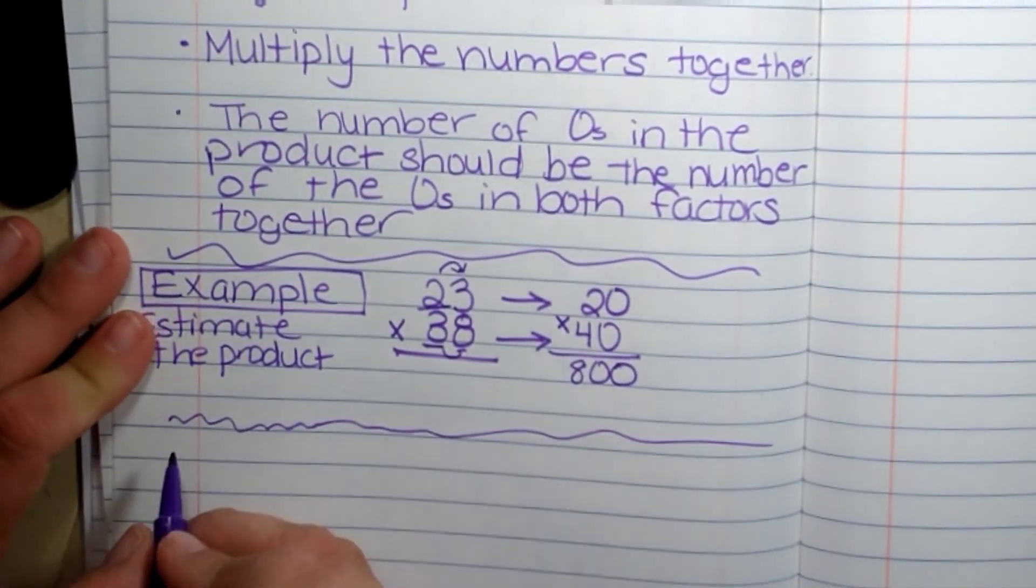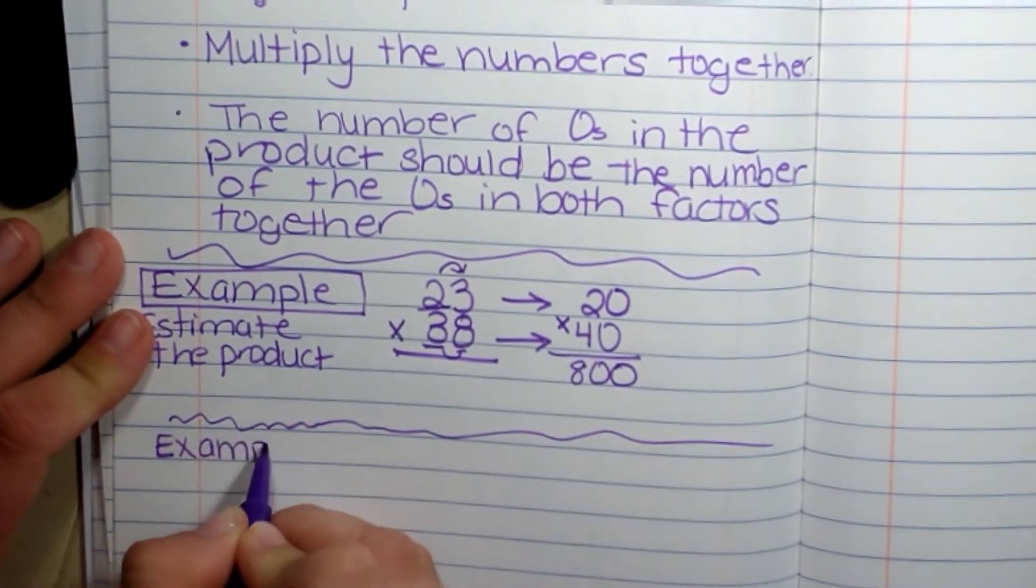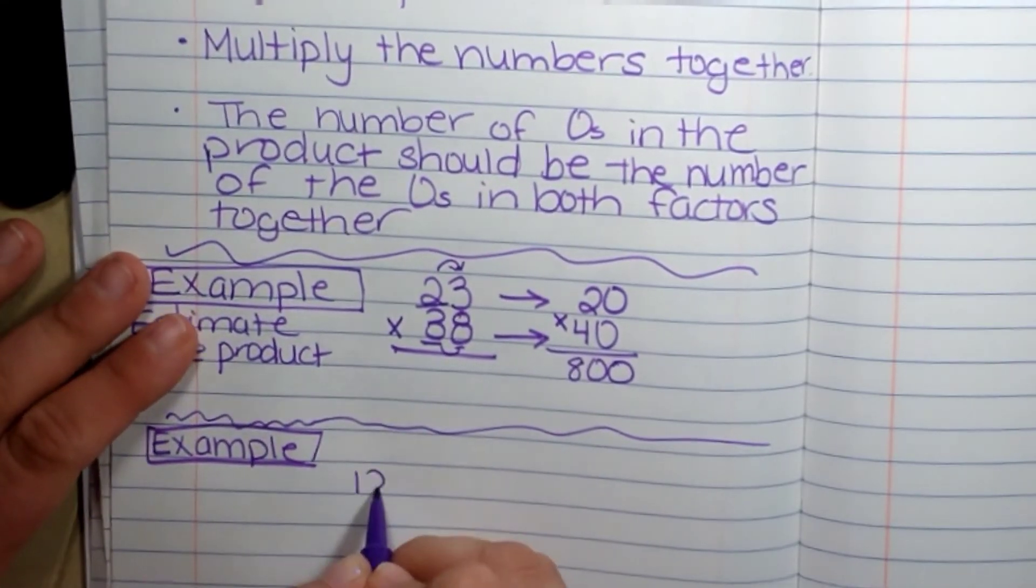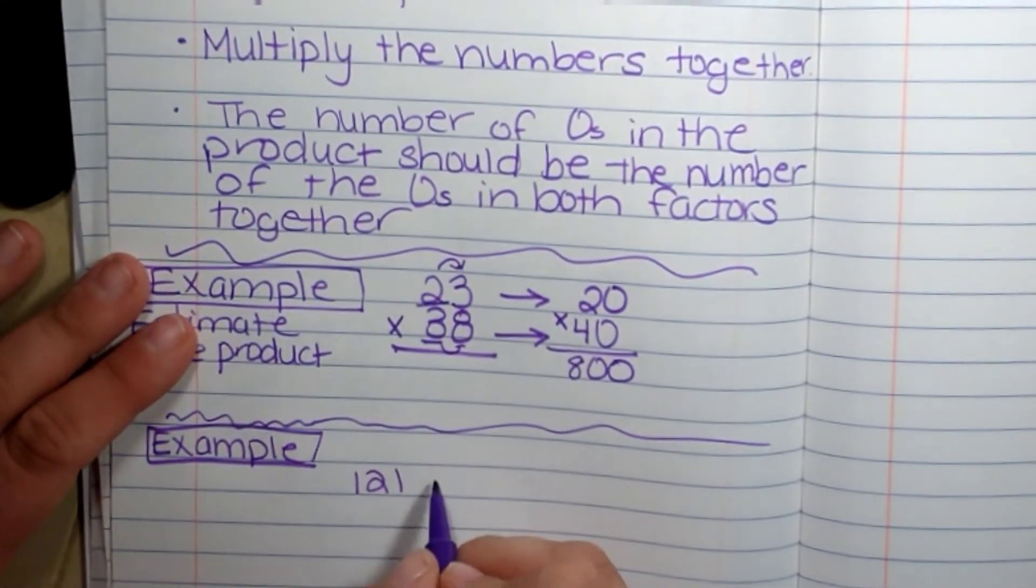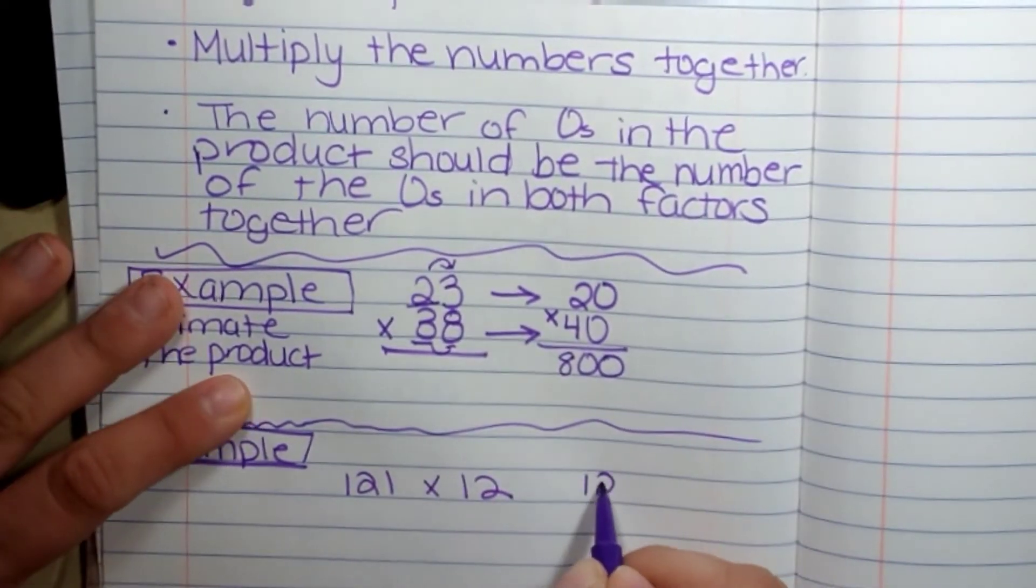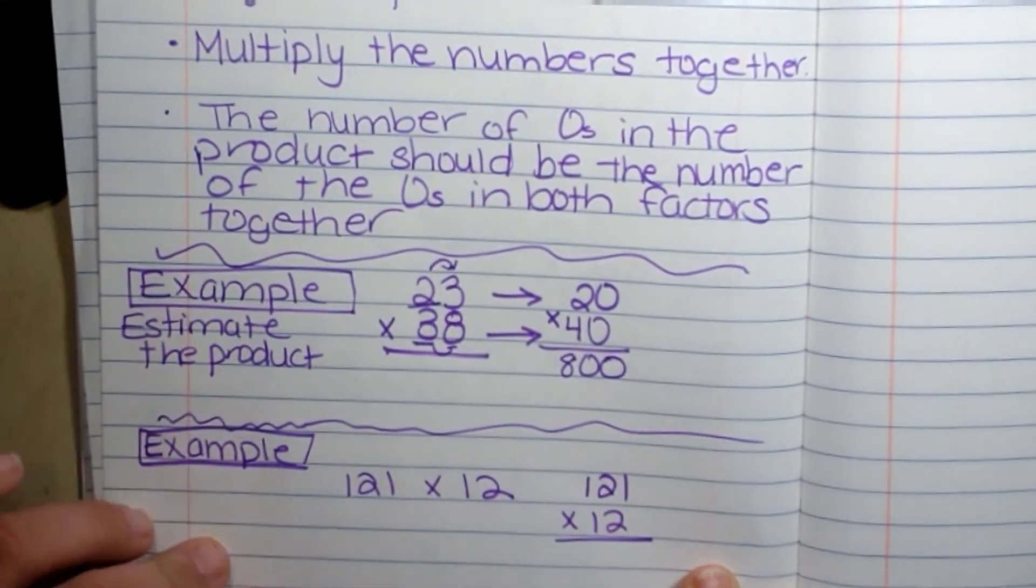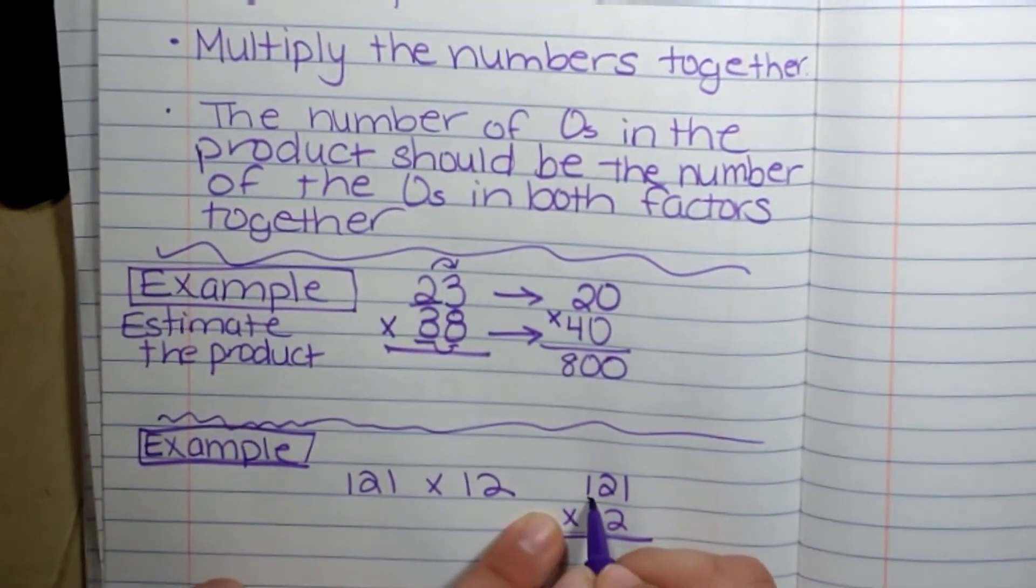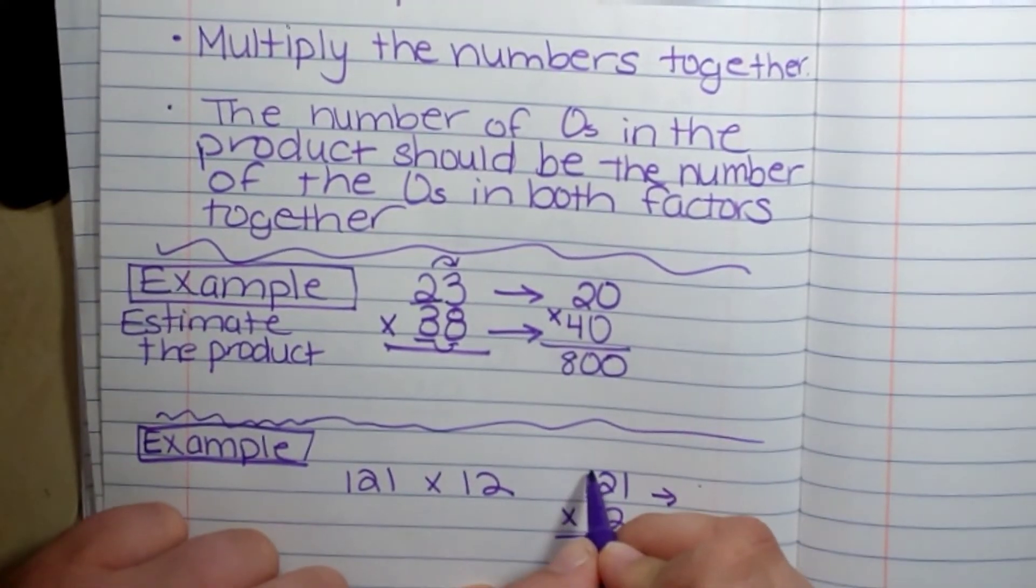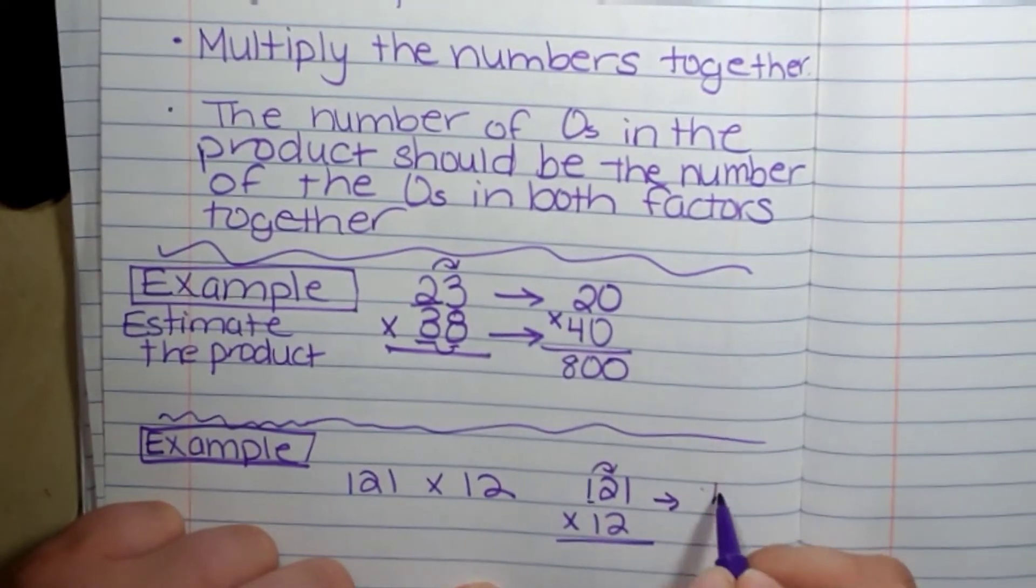My next one, estimate the product. I have 121 times 12. And if it's written that way, I can still write it like this. So the largest place value here is the hundreds, so I'm going to round to the nearest hundreds. I'm going to look next door, four or less, let it rest. This one, the highest is the 10, so you're rounding it to the place value that's closest to the left.